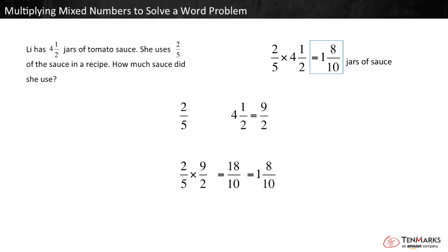So the product is eighteen-tenths, or one and eight-tenths. This is the same product we got with the model. Our answer is correct. In this lesson, you learned to multiply mixed numbers to solve a word problem. Thanks for watching!